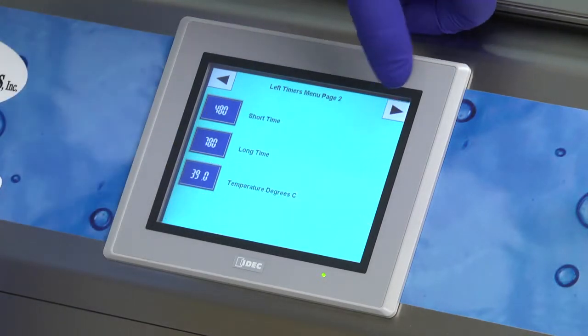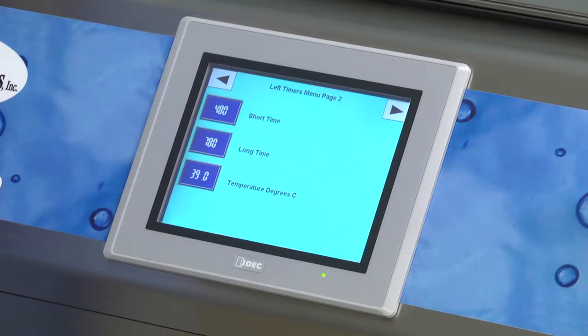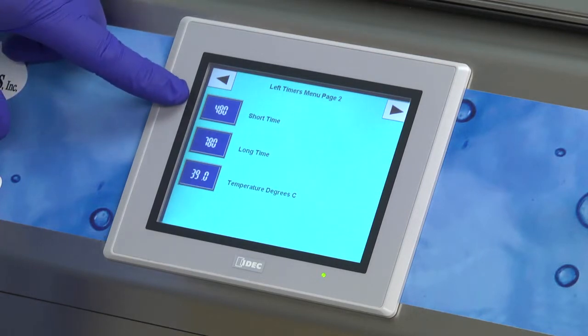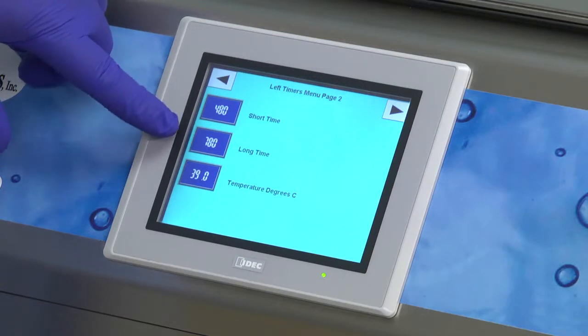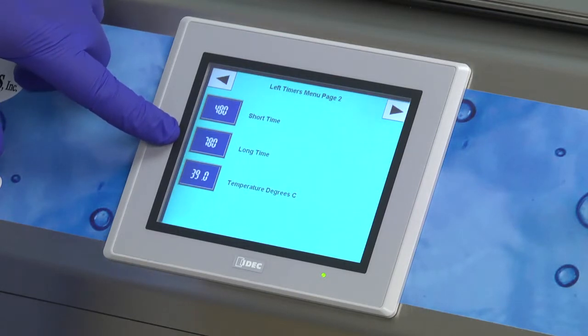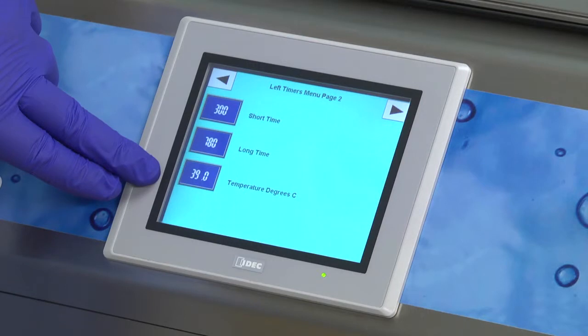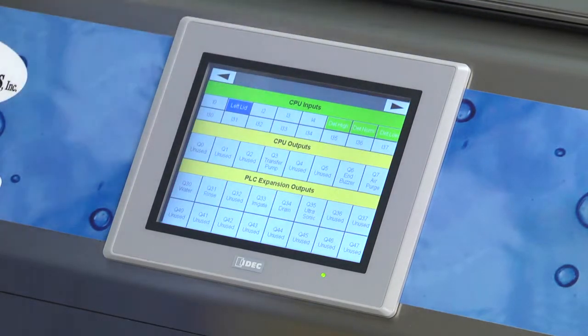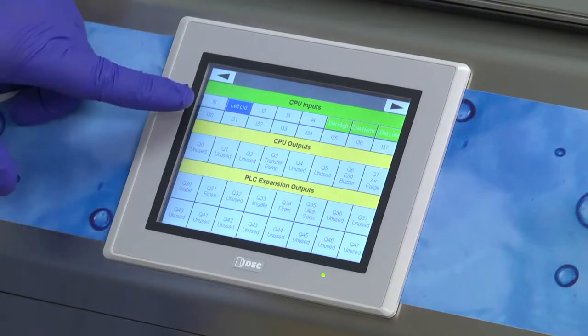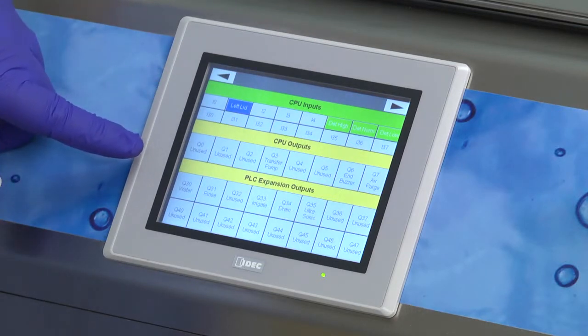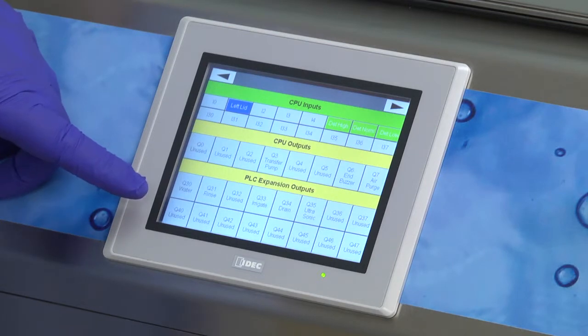Press the top right arrow to advance to page two of the timers menu. The short time is the length of time for short cycles and is preset to 480 seconds or 8 minutes. The long time is the length of time for long cycles and is preset to 780 seconds or 13 minutes. Temperature is the basin water temperature setting and should never be changed. Pressing the top right arrow again advances you to the input-output menu. This screen is used by technicians to test the various functions and components in your machine. This menu should only be used by qualified technicians.